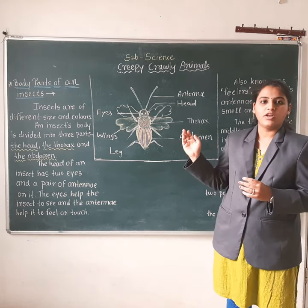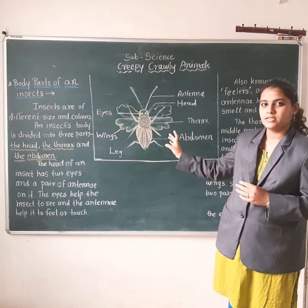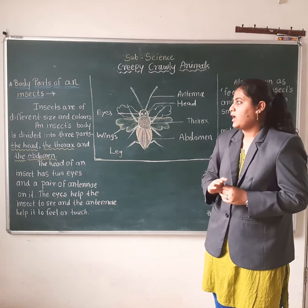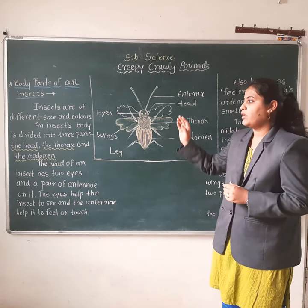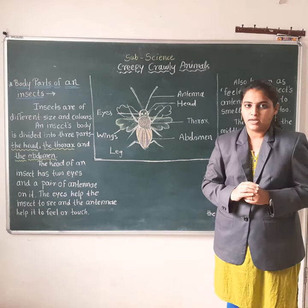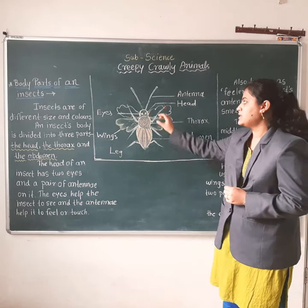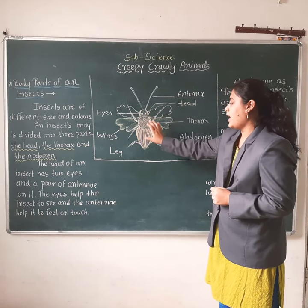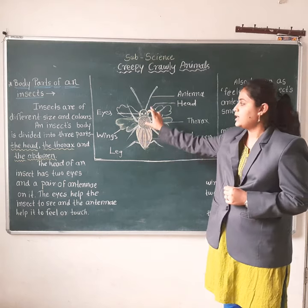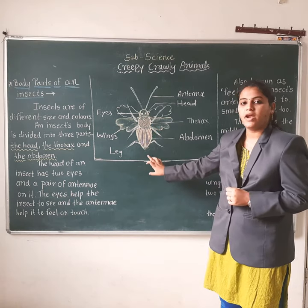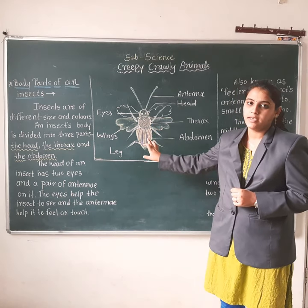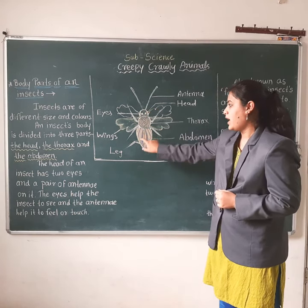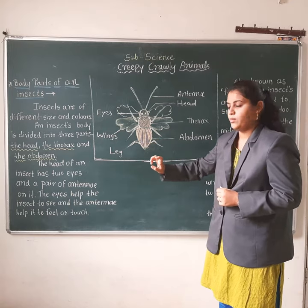Now we move on to our first point. An insect's body is divided into three parts: first is the head, the thorax, and the abdomen.